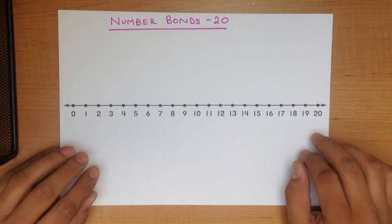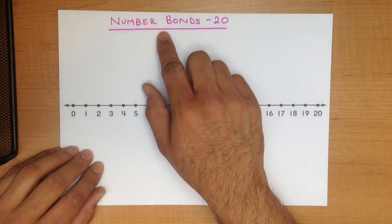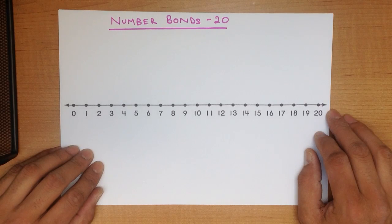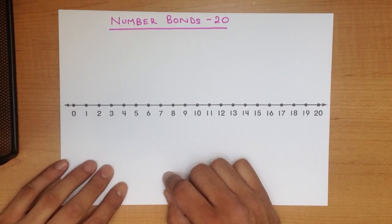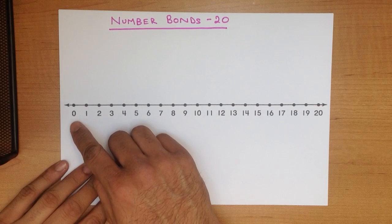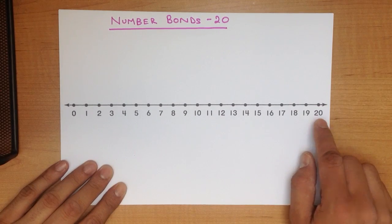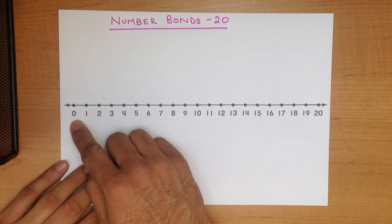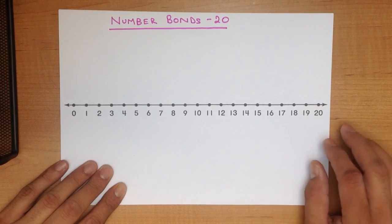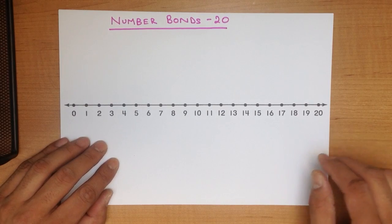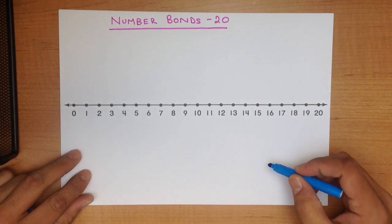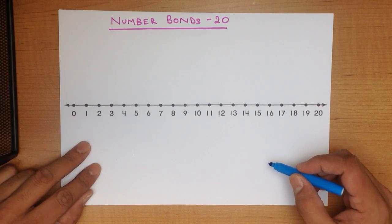In this tutorial we are going to go through number bonds to 20. The best way to do this is using the number line. We've got a printed copy over here. A number line is just a straight line going from left to right. In this case we have started from 0 and gone all the way to 20. You can draw this by hand very easily. Now if we're doing number bonds to 20, let's run through a simple example.